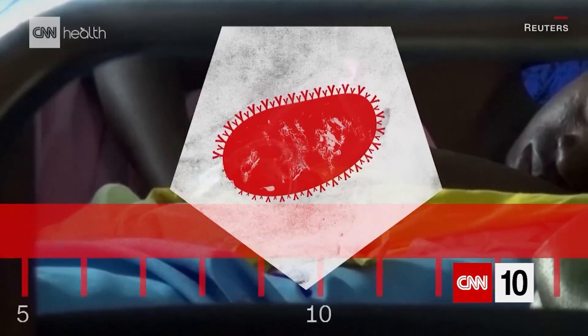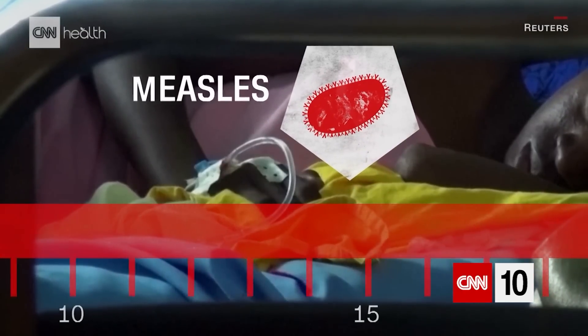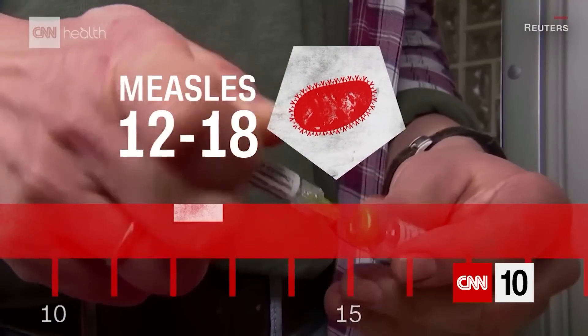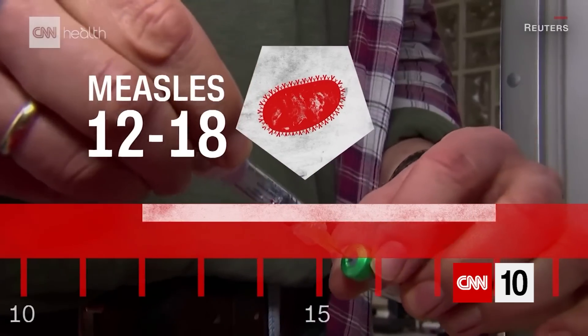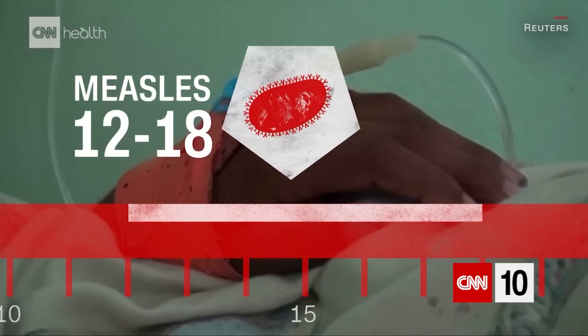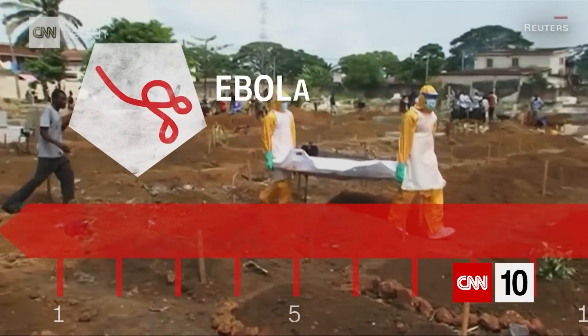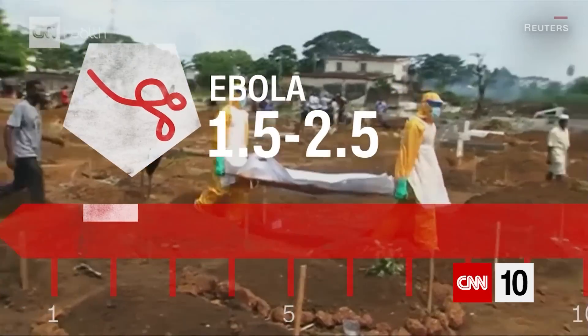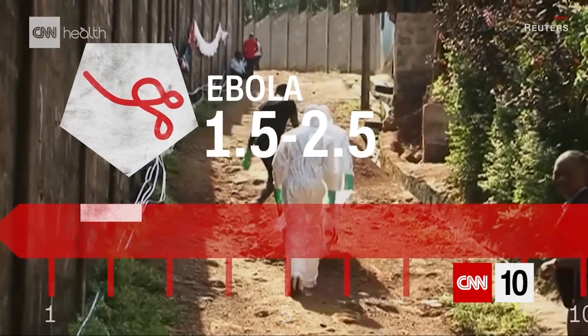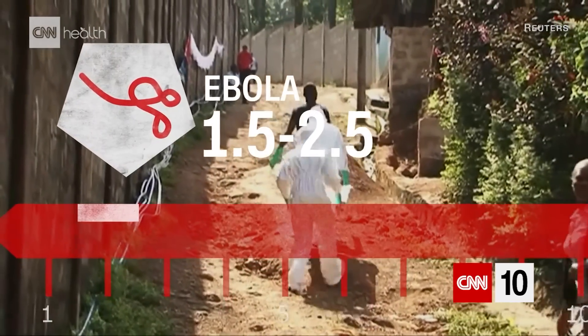An infection like measles sits higher up the spectrum, with an R-naught of between 12 and 18. At the lower end is something like Ebola, with an R-naught number of 1.5 to 2.5.